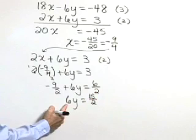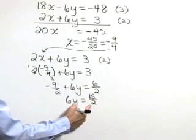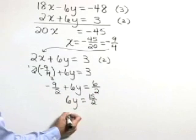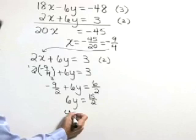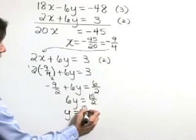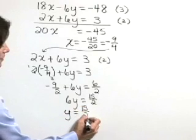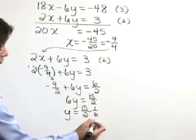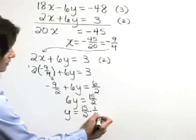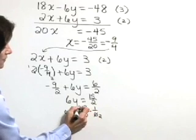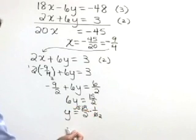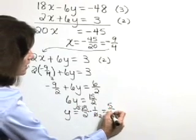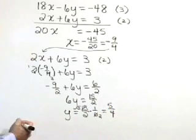As the last step, let's multiply both sides by the reciprocal of 6, which is 1 sixth. So y is equal to 15 halves times 1 sixth. Reducing: 3 goes into 6 twice and into 15 five times. Multiplying straight across, that's 5 fourths.